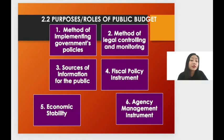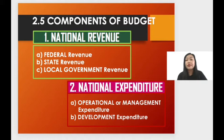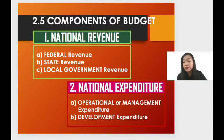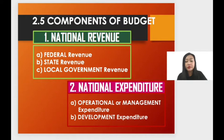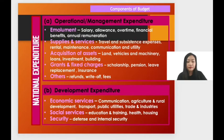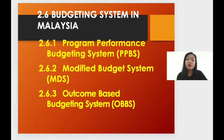The two components of the budget are revenue and expenditure. For revenue, it consists of federal revenue, state revenue, and local government revenue. For national expenditure, it consists of operational or management expenditure and also development expenditure. As for budgeting systems in Malaysia, the three main systems to highlight are the Program Performance Budgeting System (PPBS), Modified Budgeting System (MBS), and Outcome Based Budgeting System (OBBS).